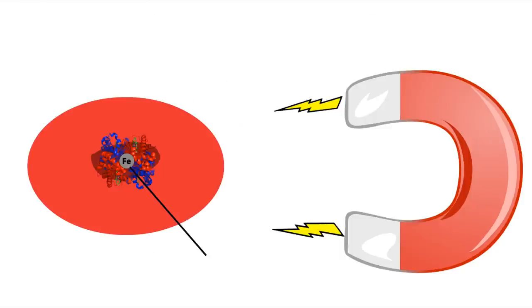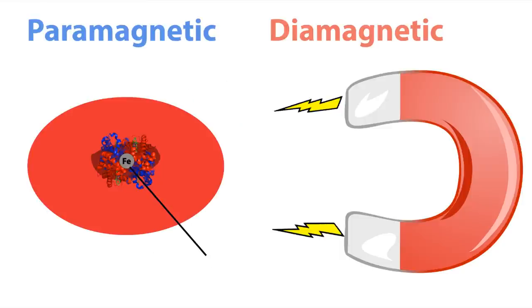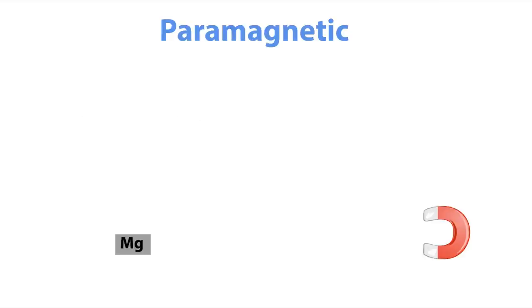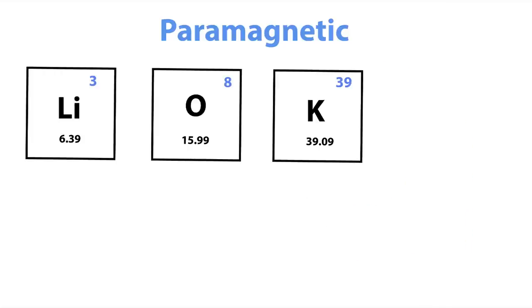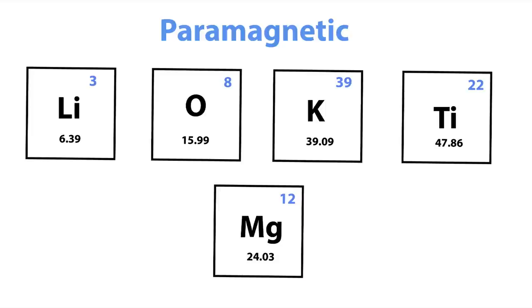Iron and hemoglobin in red blood cells is not ferromagnetic but is either paramagnetic or diamagnetic. Paramagnetism is when something is very weakly magnetic and requires a very strong magnetic field to produce even a mild attraction. Examples are lithium, oxygen, potassium, titanium, and magnesium, just to name a few.